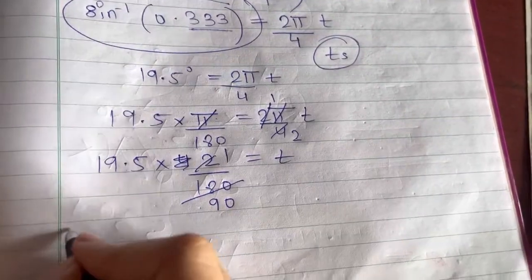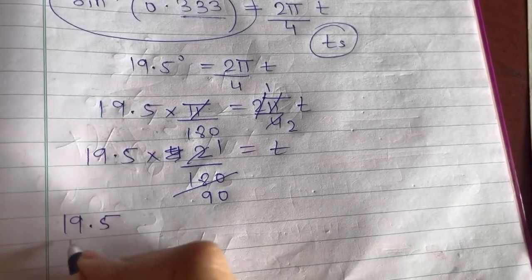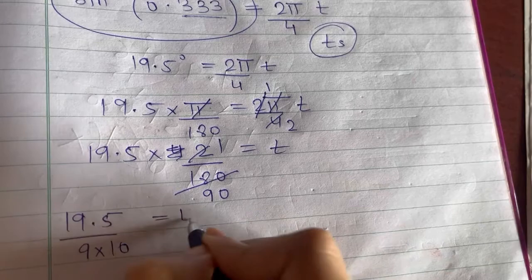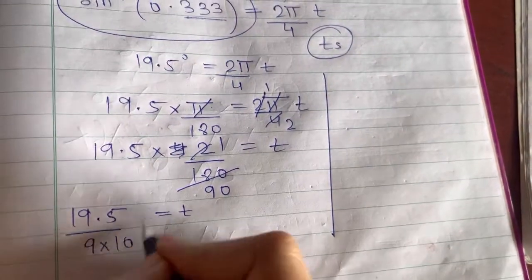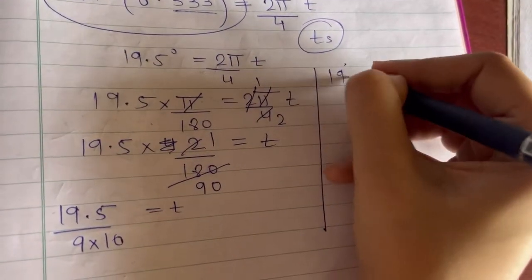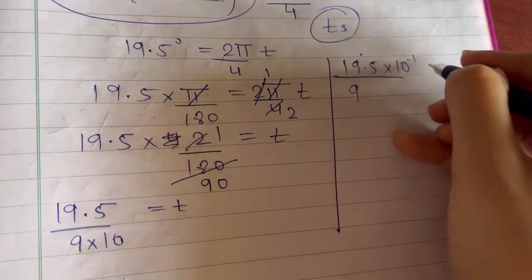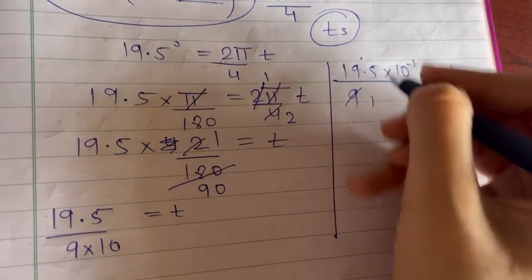So now you have 19.5 upon 90, which I am writing as 9 into 10, which is equal to small t. Now if you take this 10 in the numerator, this becomes 10 raised to minus 1 upon 9, which is equal to t. 9 1s are 9.